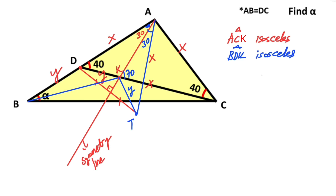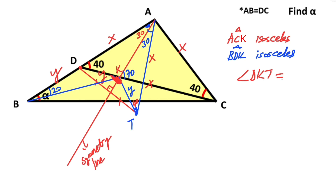Triangle BDK is an isosceles triangle, so angle DBK and angle DKB must be equal to n degrees. If here is 40 degrees, then here must also equal 40 degrees because of symmetry. If you focus on angle DKT, this angle equals 60 plus 80, because the sum of these angles equals 60 plus 80.